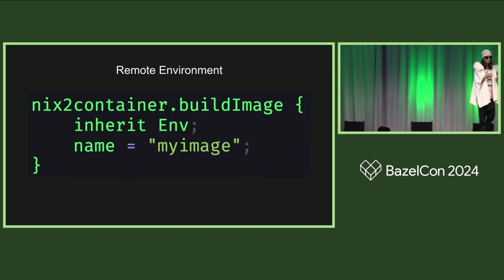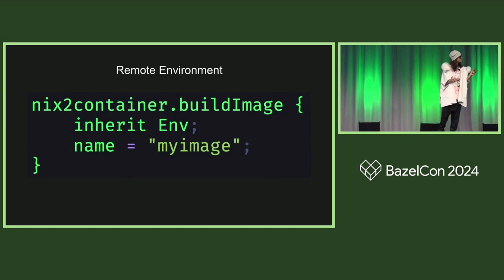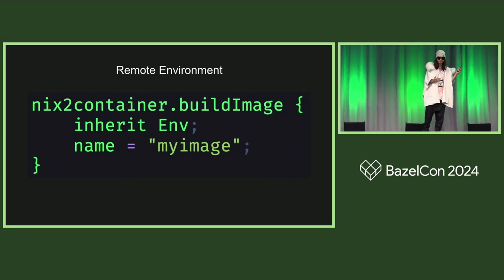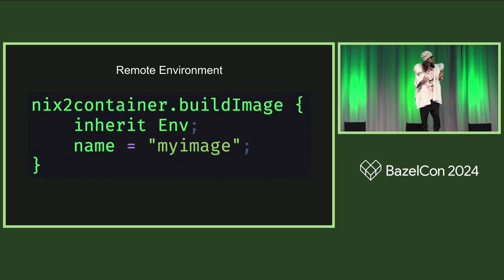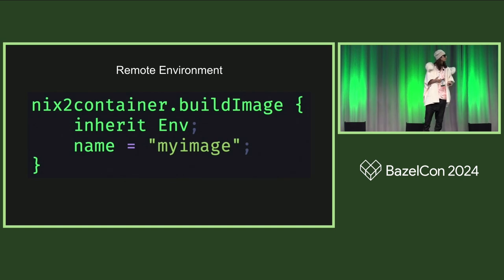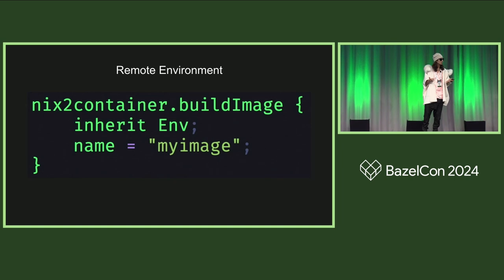Then we build the remote environment. The remote environment in this case — we take the same environment, like the same strings, and we just pass it to some container builder that, in our case, also runs in Nix. The point here is that we just forward the same strings that we initially gathered our tools from. We take the same environment and construct our image from that.